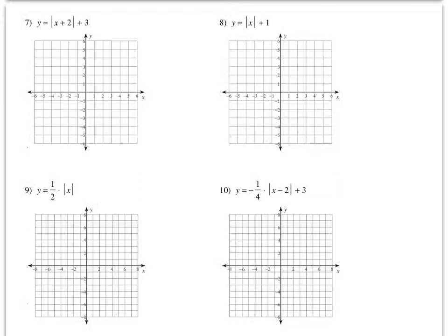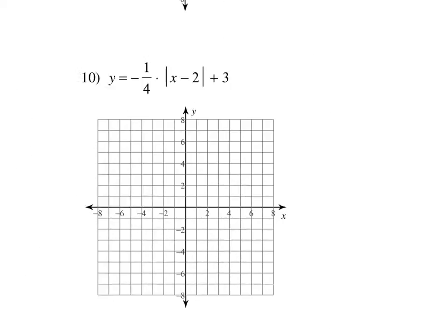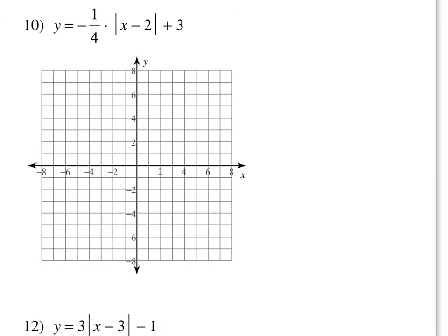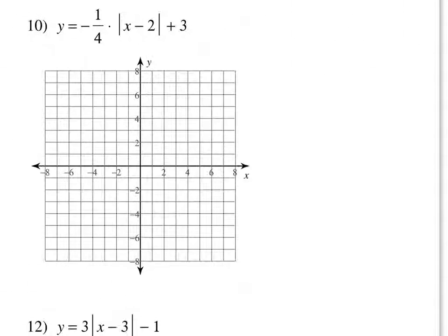Looking at number 10. Please remember that yesterday I said that there are two ways of graphing these absolute values — two ways that I want you to worry about. One was plotting points. The other was using the slope of the right side. Both methods, you need to find your vertex first.